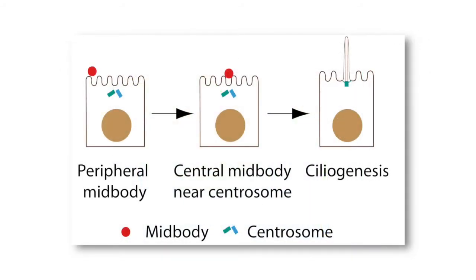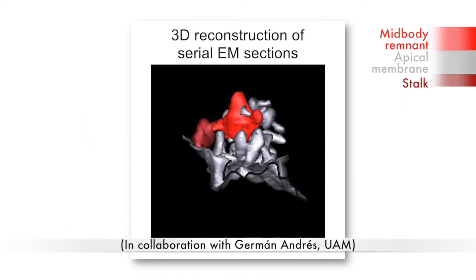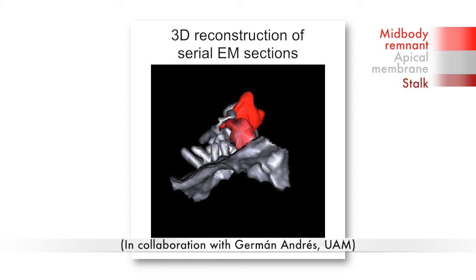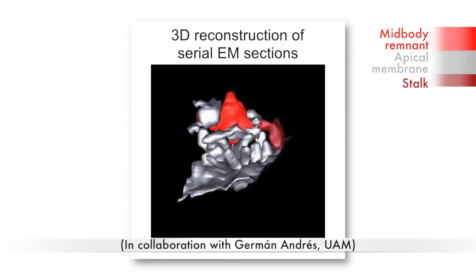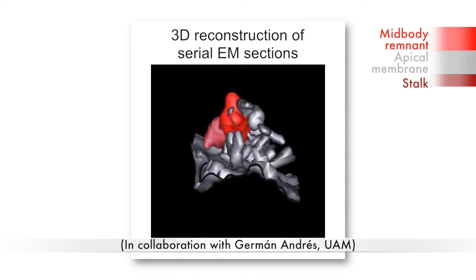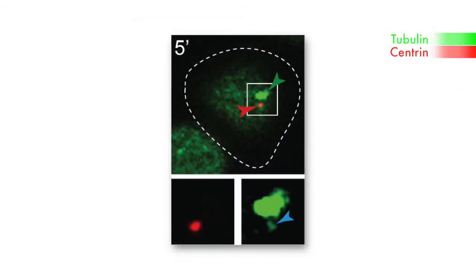But how might the mid-body remnant facilitate ciliogenesis once it encounters the centrosome at the centre of the apical surface? EM analysis of serial sections of peripheral and central remnants showed that the remnant is connected to the rest of the cell by a thin stalk. They also observed the establishment of a thin microtubular connection between the remnant and the centrosome when the two organelles meet at the centre of the apical surface. This bridge between the centrosome and the mid-body may help transfer materials to the centrosome to enable primary cilium formation.